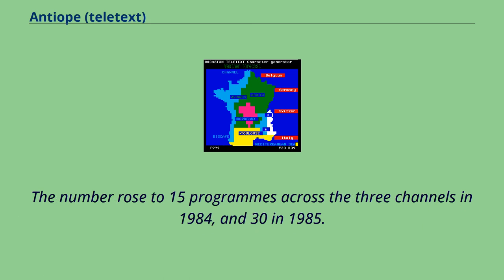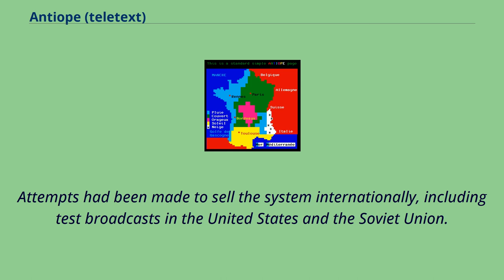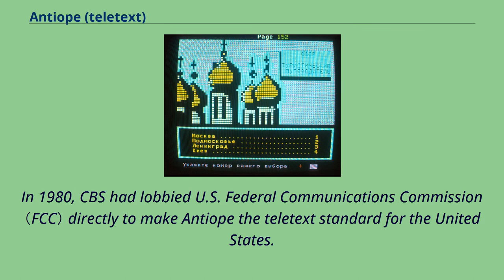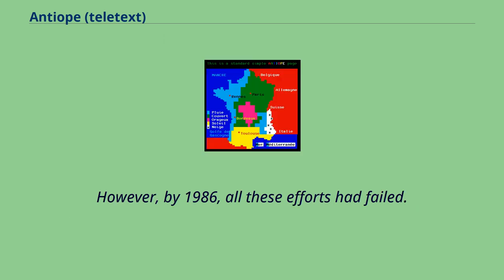The number of subtitled programs rose to 15 across the three channels in 1984, and 30 in 1985. Attempts had been made to sell the system internationally, including test broadcasts in the United States and the Soviet Union. In 1980, CBS had lobbied the U.S. Federal Communications Commission directly to make Antiope the teletext standard for the United States. However, by 1986, all these efforts had failed.